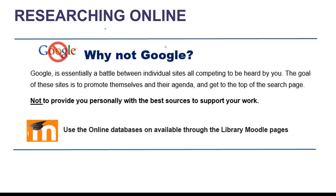The next thing I want to touch on is researching online. Very often people just Google something and you could come back with anything. Basically, Google isn't designed to help you — it's a search engine where every page is just trying to get your attention. You're certainly not going to find things to the standard you need to be developing throughout your study. Also, looking at images in general is much more difficult to reference and keep track of. You always need to say who came up with that image — photographer, designer, architect — and if in doubt, ask in the library.